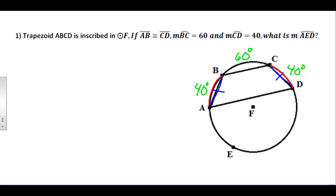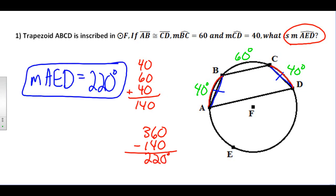So I can figure out the remainder here, arc AED, by adding up the arcs I have and subtracting from 360 degrees. When I add up my 40, 60, and 40, I get 140 degrees. And when I subtract that from 360, I get 220 degrees. That means the measure of arc AED is 220 degrees.